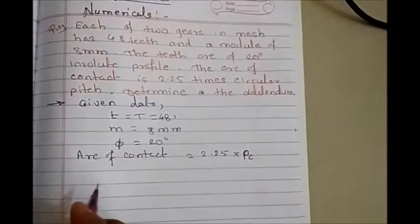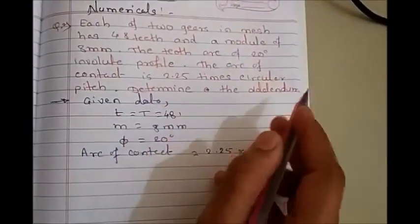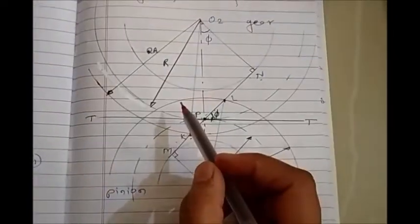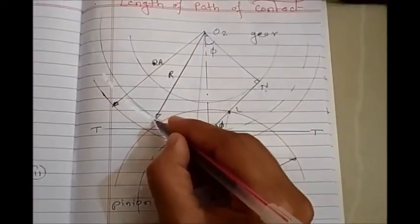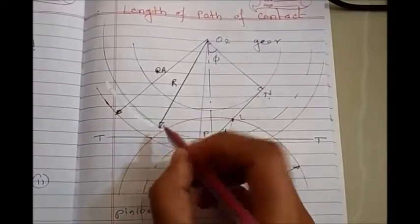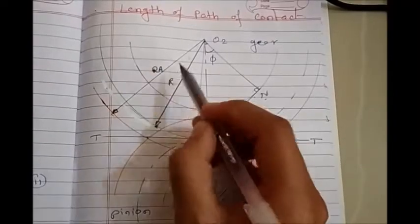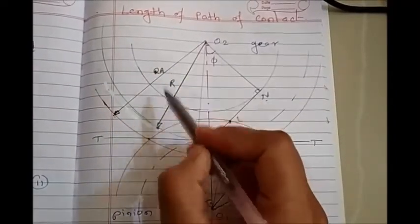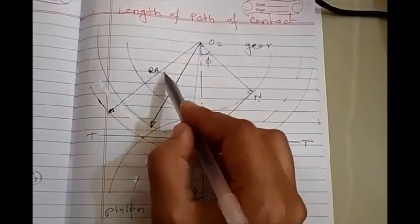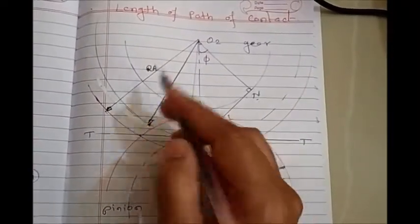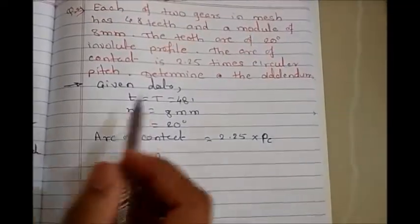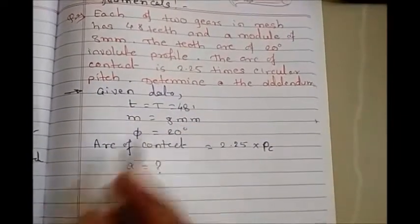They ask us to determine the addendum, so a equals question mark. To calculate addendum, the radial distance from circular pitch to the top of the gear, we use: radius of addendum circle minus radius of pitch circle. So Ra minus R will get the addendum a.